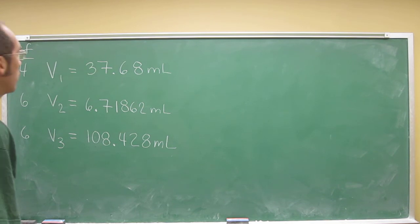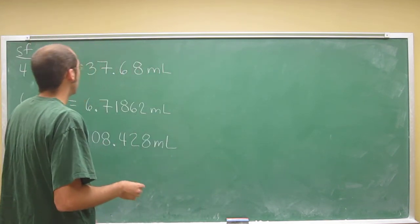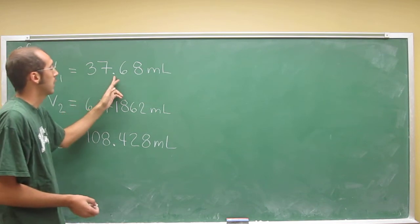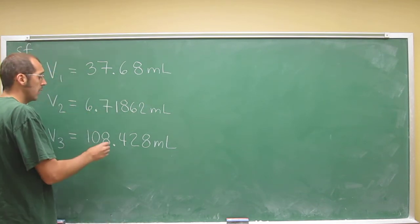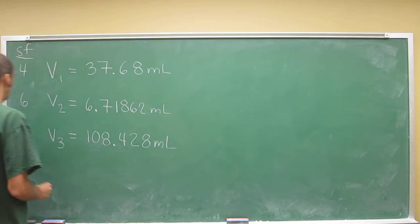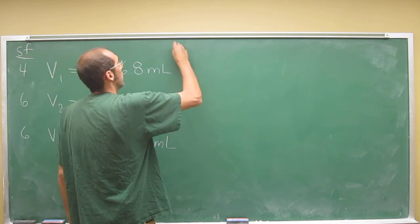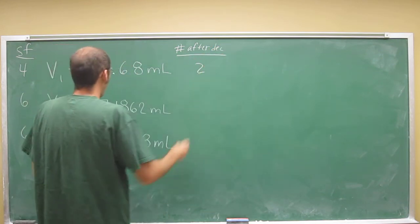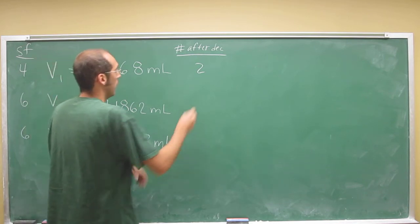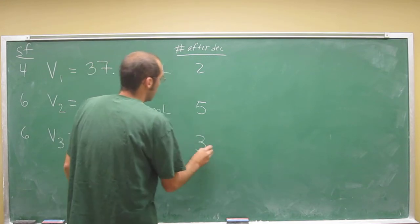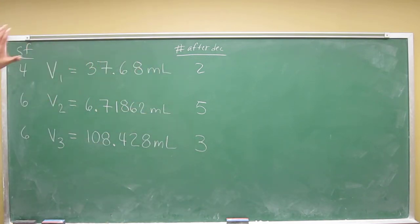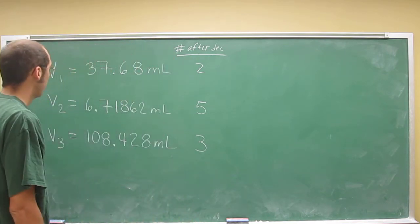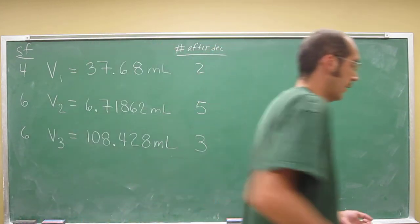So let's go ahead and add these things together. Really what you're going to do is go to the least precise one, so the one with not really the least significant figures, but it's going to be the least numbers after the decimal place. This one has three numbers after the decimal place. So let's make another column: numbers after decimal. This one's got two, this one's got five, and this one's got three. So that's the number you're really looking at, and in fact when you add these up, the final number you're going to get is going to only have two numbers after the decimal place.